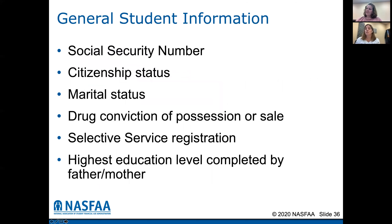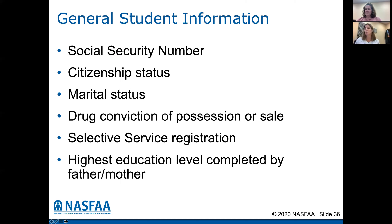Some general student information you'll need when completing this form: social security numbers, citizenship status, marital status, any drug conviction or possession/sale, selective service registration for male students who are 18 or older, and highest education level completed by your parents. Also, when completing the FAFSA on the web, always pay attention to the blue ribbon at the top of the screen — it indicates whether it's looking for student information or parent information. Make sure you always review the top of the screen before filling out information so you know who they're asking questions for.